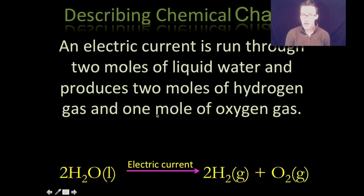You will also need to be able to do that in reverse. So as you look at the top of your screen there, we're given the word format for a chemical change. It says an electric current is run through two moles of liquid water and produces two moles of hydrogen gas and one mole of oxygen gas. So take a quick moment, look at the word equation, compare it to the formula equation, pause the video if you need to.